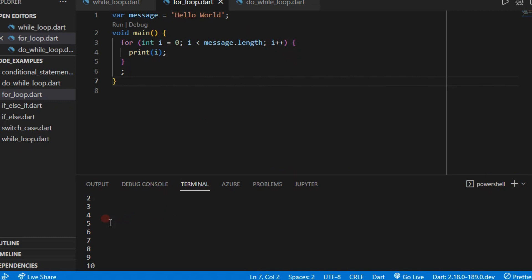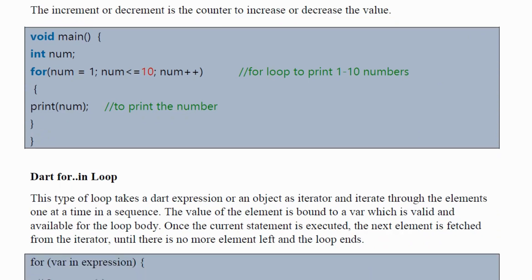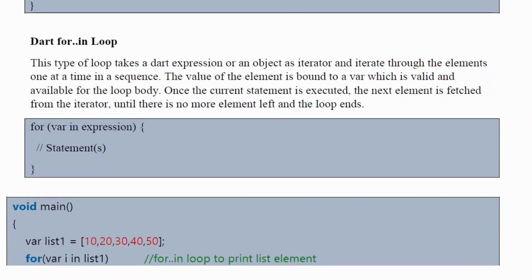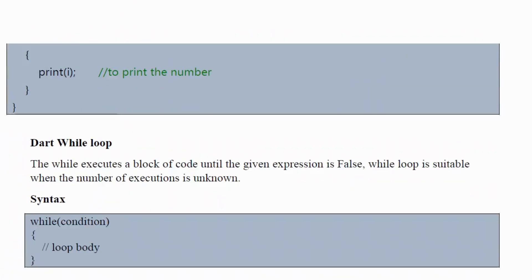So we've printed the index of the different string elements in that variable using a for loop. You can do many things with a for loop — for example, iterate through a list. The for loop is most suitable when you have a specific number of times you want to iterate. There is also a 'for-in' loop, which takes an expression or object as an iterator and iterates through elements one at a time in a sequence. You can explore that based on what we've already covered.